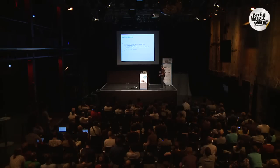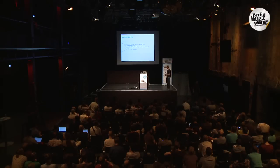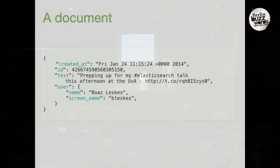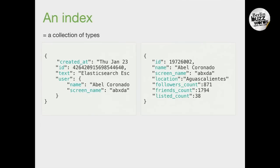The first thing in Elasticsearch is what we call a document — things you can put into Elasticsearch and find later on, modeled as JSON. Here's a subset of a Twitter tweet we can load into Elasticsearch. A collection of documents that share commonality in structure we call types, comparable to a table. A collection of types is what Elasticsearch calls an index.